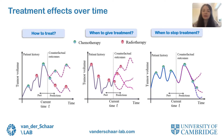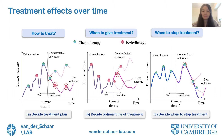Such causal inference methods are trained on observational data where for each patient we only observe what has happened to them under the factual given treatment. However, to provide clinical decision support, we need to estimate counterfactual outcomes — that is, what would have happened to the patient if a different sequence of treatments had been given. By estimating these counterfactual outcomes for each patient, we can then make more complex treatment decisions by determining which treatment plan leads to the best patient outcome, which in this case is the smallest tumor volume.